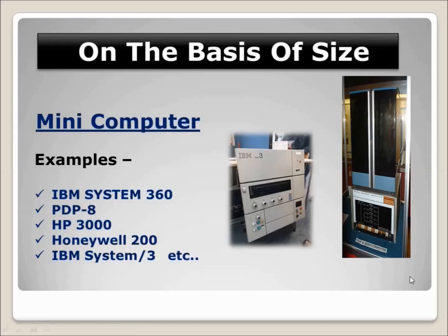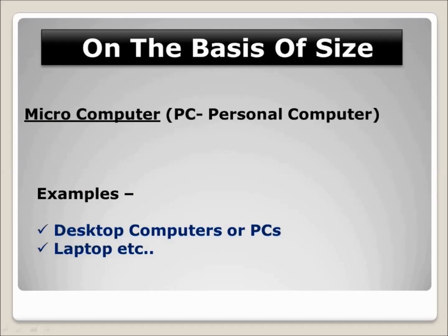The last type is the microcomputer, also called a personal computer or desktop computer. PC stands for personal computer. Microcomputers are general-purpose computers used for general work like preparing documents, printing, and preparing tables in MS Excel. The first microcomputer was built around an 8-bit microprocessor chip.